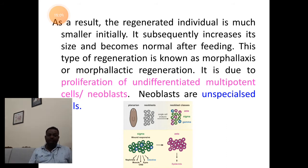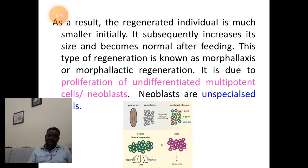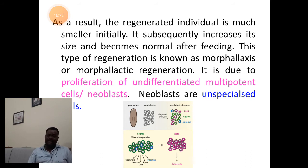The regenerated individuals initially appear as tiny or smaller organisms and later grow in size, attaining the normal size of an adult. This is what we call morphallaxis.